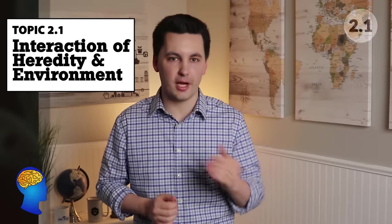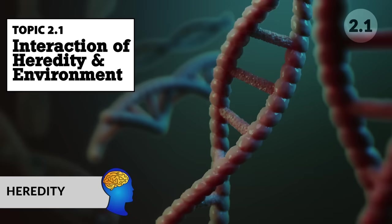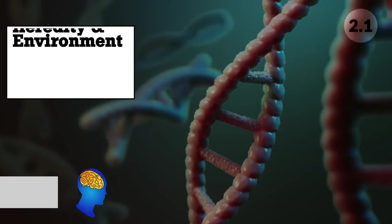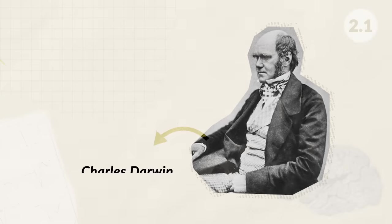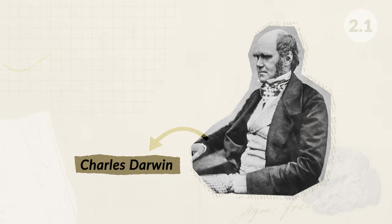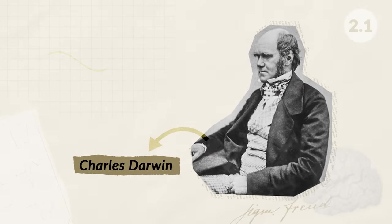Unit 2 starts with the interaction of heredity and environment. Heredity is the passing on of different physical and mental traits from one generation to another. Individuals such as Charles Darwin focused on understanding how heredity and environment impacted an individual. Darwin created a theory of evolution which stated that evolution happens by natural selection — individual traits beneficial to a species' survival would be passed on, while undesirable traits would die off.